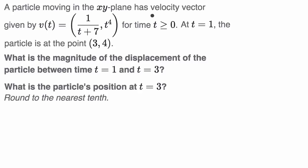A particle moving in the xy-plane has a velocity vector v(t), where the x-component of velocity is 1/(t+7) and the y-component is t to the fourth, for t ≥ 0. At t = 1, the particle is at the point (3, 4). The first part asks for the magnitude of the displacement between t = 1 and t = 3, and then we need to find the particle's position, rounded to the nearest tenth.